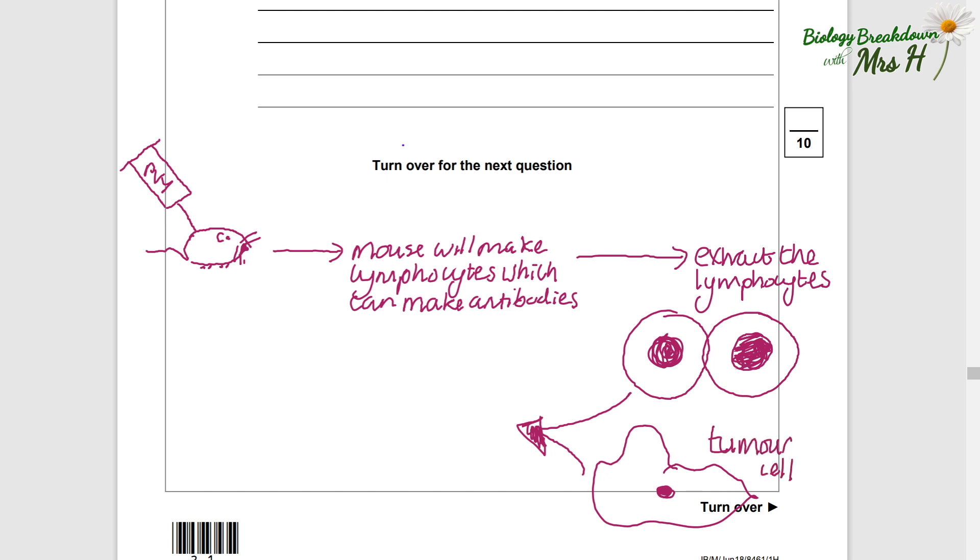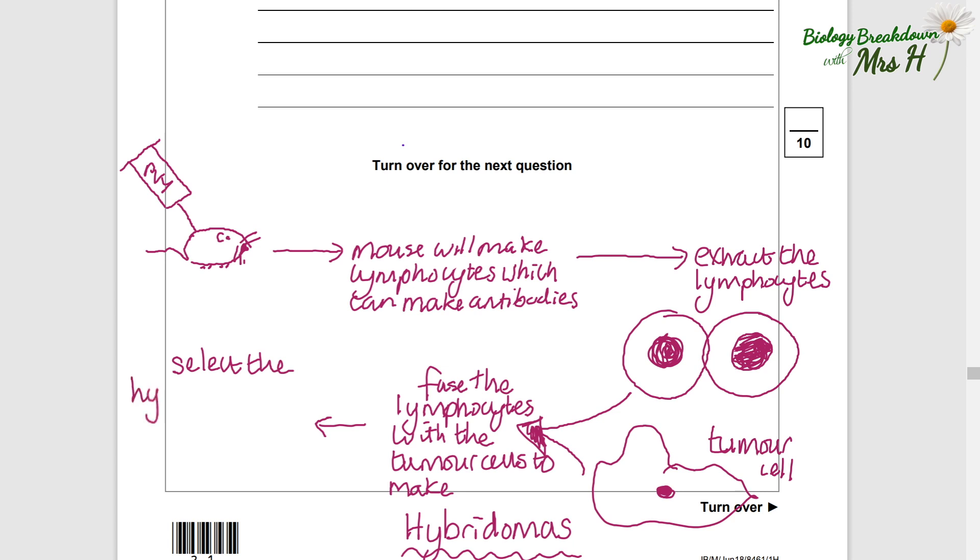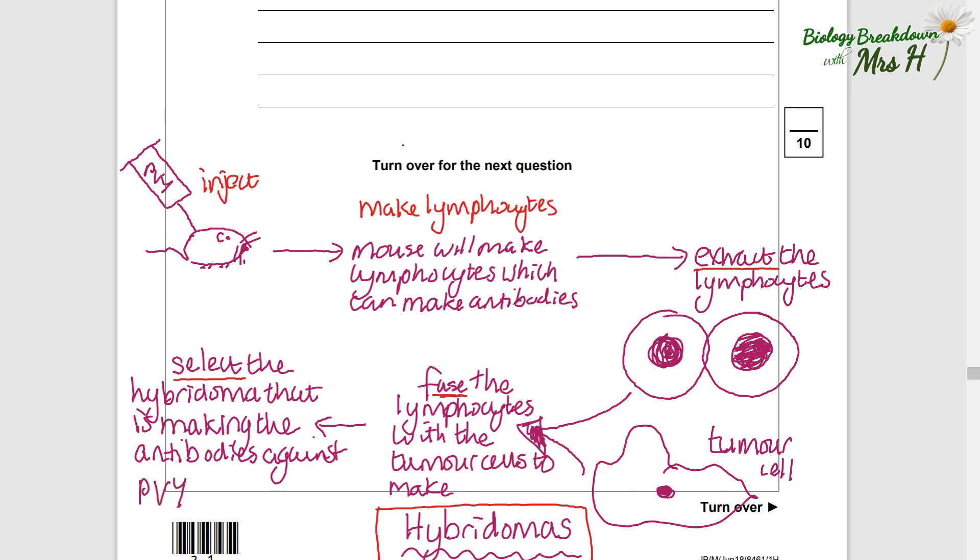So extract the lymphocytes that can make antibodies and then fuse those with tumor cells. That way we can make cells that can keep dividing like tumor cells and also make lots of antibodies that we want. These cells that have been made by fusing the lymphocytes that can make antibodies with tumor cells are called hybridomas, and that's a keyword you must put into your answers. So we will have different hybridomas and we need to select the correct hybridoma that is going to give us the antibodies against PVY.